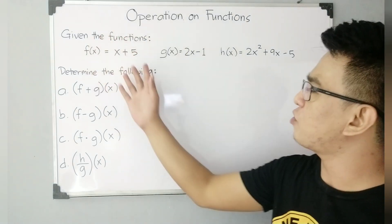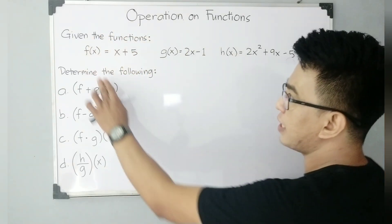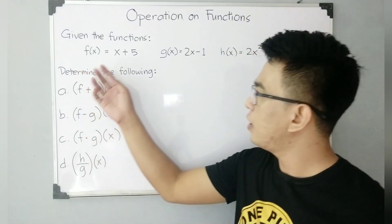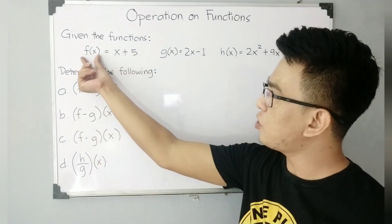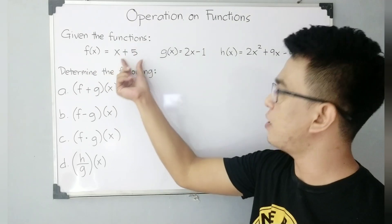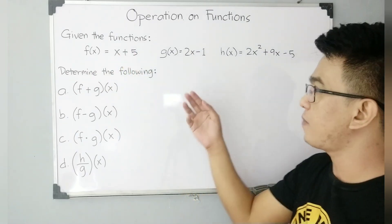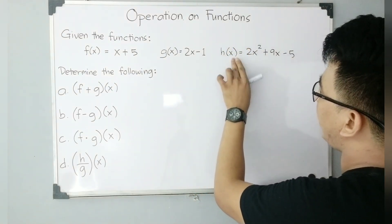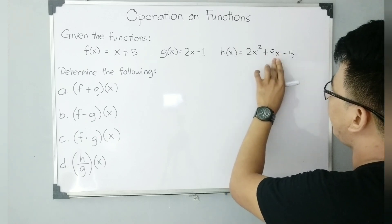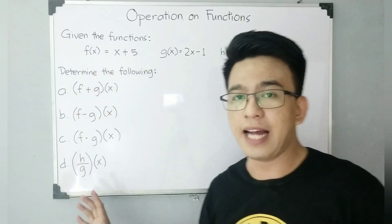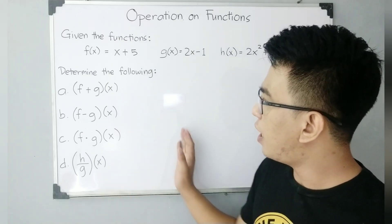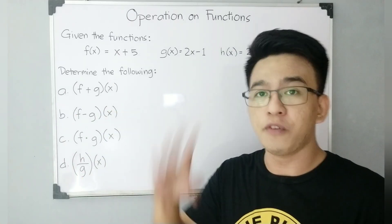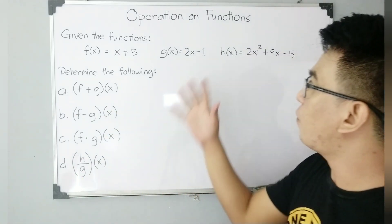So let's have these examples. We have here three given functions. The first is function f, function g, and function h. Function f of x is equal to x plus 5. Function g of x is equal to 2x minus 1. And h of x is equal to 2x squared plus 9x minus 5. This is the first set of our given examples.